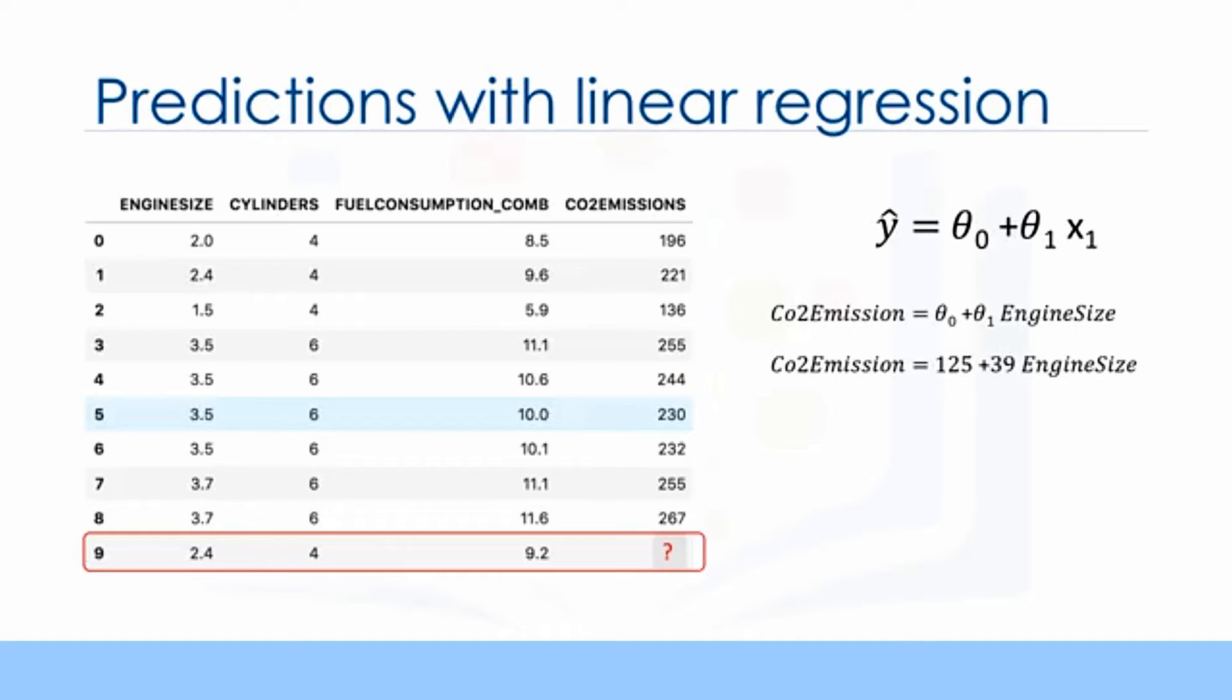For example, let's use theta 0 equals 125 and theta 1 equals 39. So, we can rewrite the linear model as CO2 emission equals 125 plus 39 times engine size. Now, let's plug in the ninth row of our dataset and calculate the CO2 emission for a car with an engine size of 2.4. So, CO2 emission equals 125 plus 39 times 2.4. Therefore, we can predict that the CO2 emission for this specific car would be 218.6.